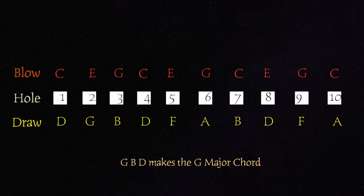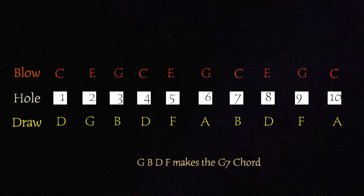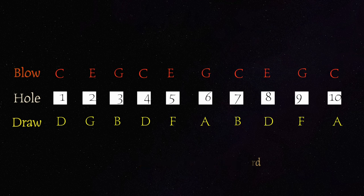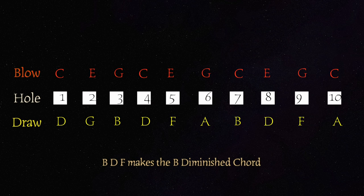Then if you add the 5 draw, if you play those 4 holes together, you have a G7 chord, which is usually used in blues. Another chord to notice but isn't often used is the 3, 4, 5 draw, or the B diminished. The B, D, F creates a B diminished chord.